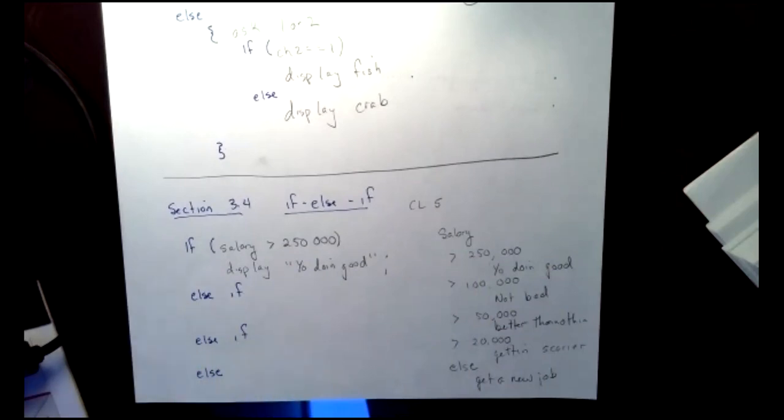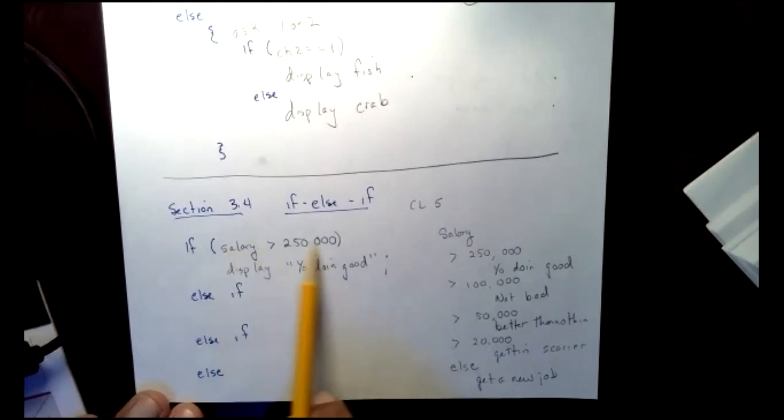Does it skip everything after yo doing good? No. Yeah, no. Yeah, it actually would. It'll skip all the way down past the else statement. Okay. My next client. Well, if you make greater than 250,000, we're going to display y'all doing good. And then we're going to jump way down in our program past my else where my else ends. So now that situation is taken care of.